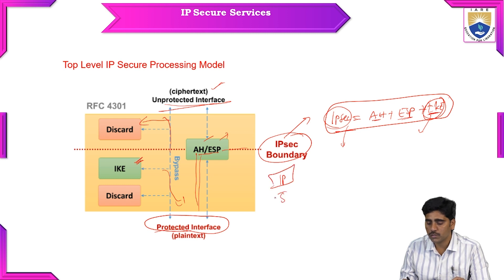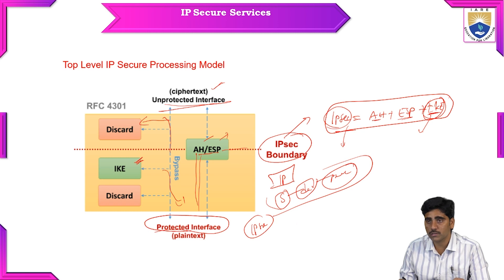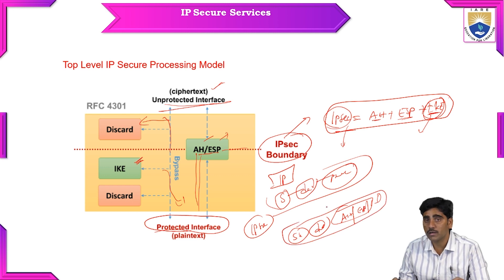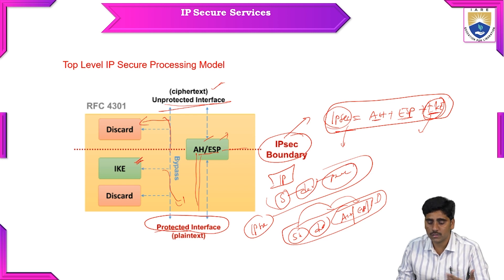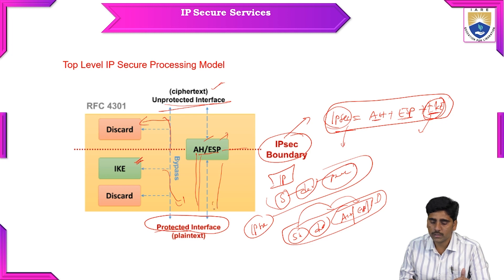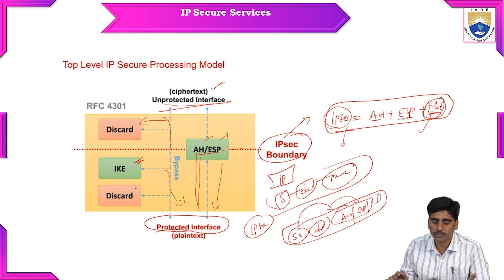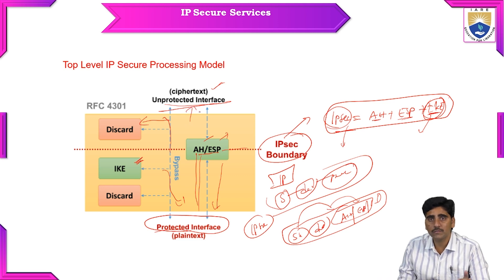The original IP packet contains only a source address, destination address, and packet header. But in the IPsec process, along with the source and destination headers, the authentication header and encapsulating security payload header are also provided to the destination. When the authentication header and IKE are present, the data becomes a protected interface; when they are absent, it becomes an unprotected interface.